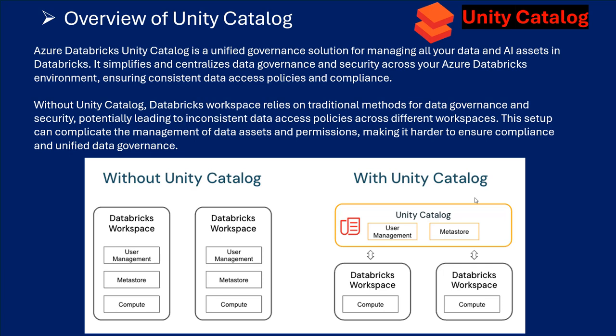Azure Databricks Unity Catalog is a unified governance solution for managing all your data and AI assets in Databricks. It simplifies and centralizes data governance and security across your Azure Databricks environment, ensuring consistent data access policies and compliance. Without Unity Catalog, Databricks workspaces rely on traditional methods for data governance, potentially leading to inconsistent access policies, complicating data management and making it harder to ensure compliance.